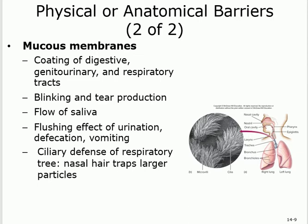Other protective mechanisms include blinking, which prevents things from entering the eyes. Tears, similar to sweat, provide a flushing effect and contain antimicrobial agents and low pH. Saliva works similarly. All fluids perform a flushing and antimicrobial function. Urine provides a flushing effect; defecation and vomiting also flush out anything in their path. Besides flushing, these fluids also have different pH levels that can be defensive.